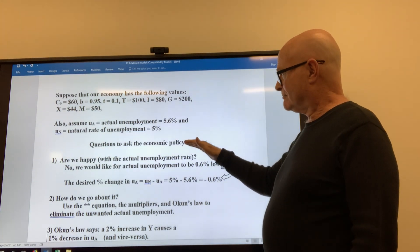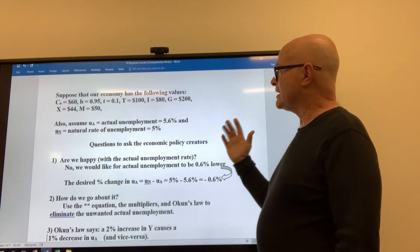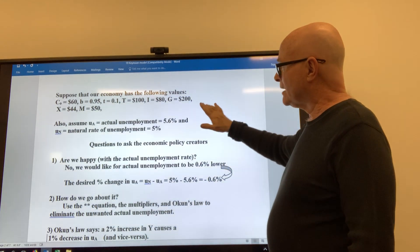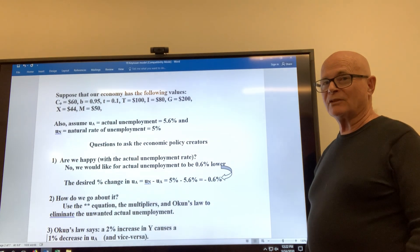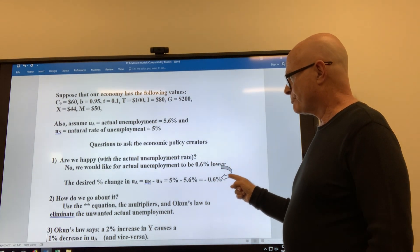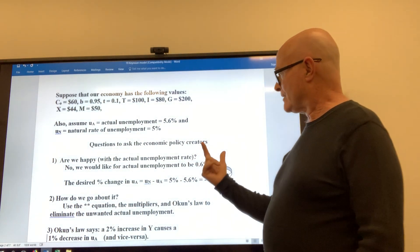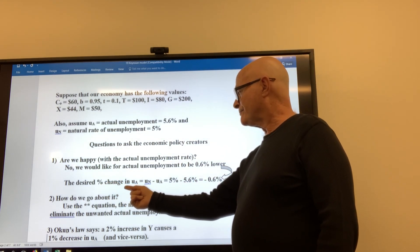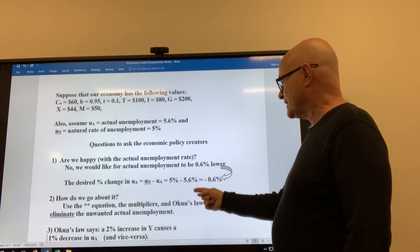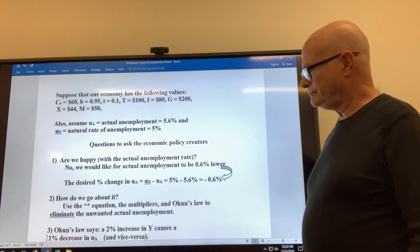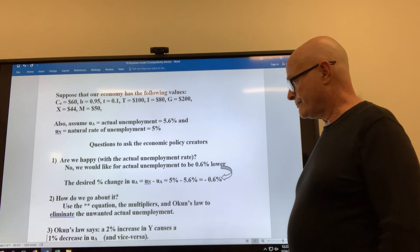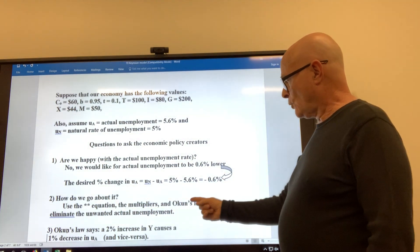So if you're a policy person for the government, you could ask yourself, well let's see, if actual unemployment is 5.6 and the natural rate or healthy rate would be five, are you happy? And you could say, well not really, because you've got six tenths of a percent of unemployment that you'd like to get rid of. So you'd like actual unemployment to be six tenths of a percent lower. Algebraically you could find that change that you want, the desired percentage change or change in the percent of the actual unemployment. The natural rate minus the actual rate, so five minus 5.6. You'd like it to drop six tenths of a percent. How do we go about doing this?